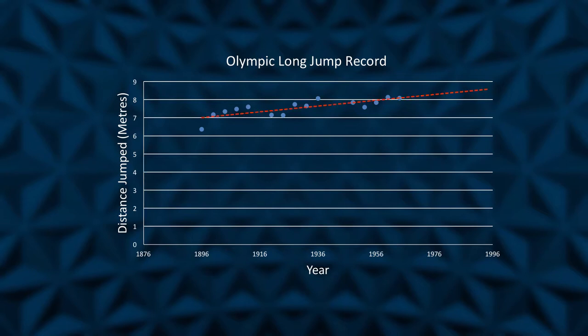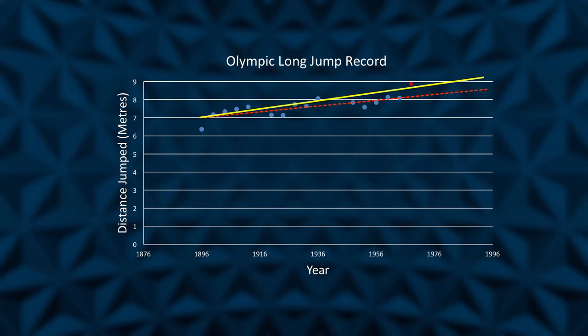It is not unreasonable to use this data to predict the distance of the winning jump in subsequent Olympic finals. In 1968, the Olympic Games were held in Mexico City. Bob Beamon won with a leap of 8.90m. He beat the previous Olympic record by 78cm and his own world record by 51cm. As the next Olympics would not be held for another four years, Beamon's jump might be included to adjust our predictions for future winning jumps.